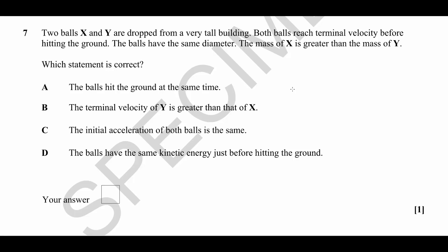Question number seven is about terminal velocity. We've got two balls being dropped, X and Y, from a very tall building such that they will reach their terminal velocity before hitting the ground.